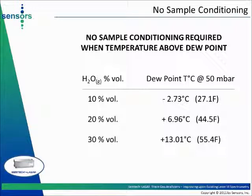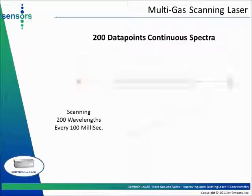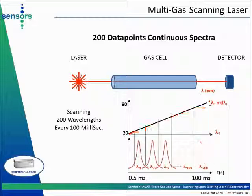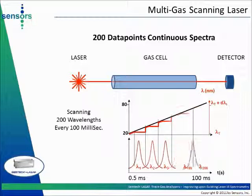If the operating temperature drops below the dew point temperature, only mild heating of the sample lines is required. The Semteklas R is a scanning laser spectrometer. Wavelength accuracy is controlled at 0.01 ppm by means of temperature control of the laser. Varying temperature to change laser wavelength is a slow process and may compromise wavelength accuracy. Instead, a current ramp is applied to the laser to change the emission wavelength, allowing very fast scanning of a large number of wavelengths — yielding 200 data point spectra every 100 milliseconds — without compromising wavelength accuracy or reproducibility.